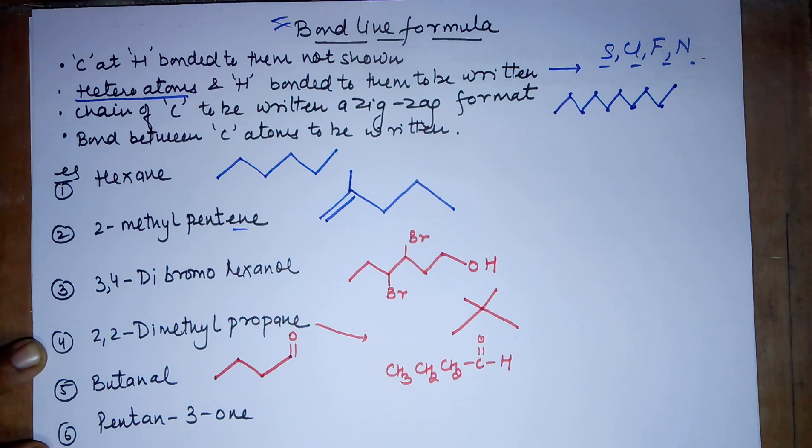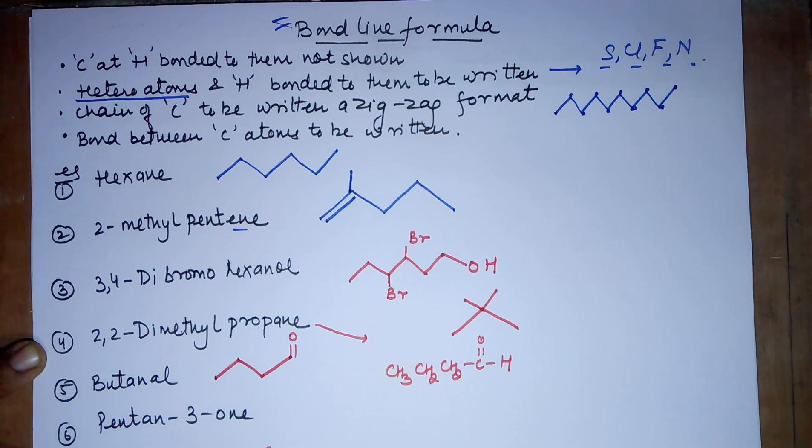Coming to the last example. Pentan-3-one. -one means a ketone. Pentan means 5 carbons. 3rd is the position. Let's check. 1, 2, 3, 4, 5. The 3rd position has a ketone.